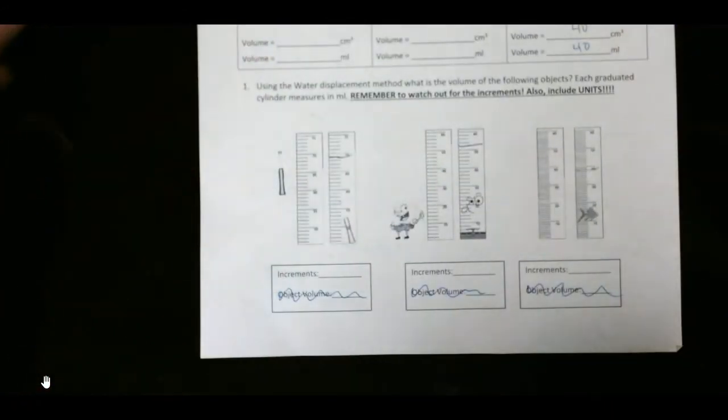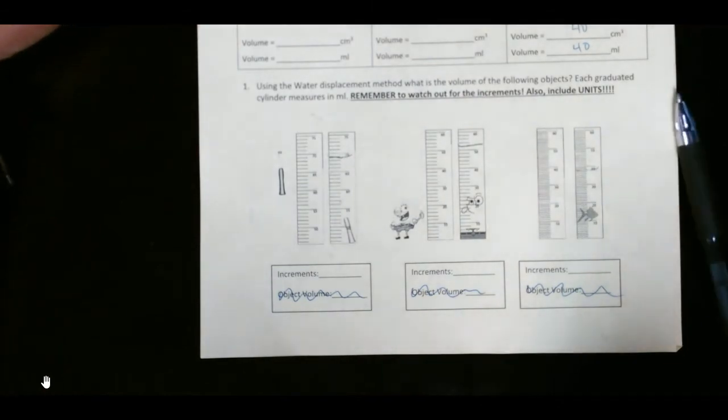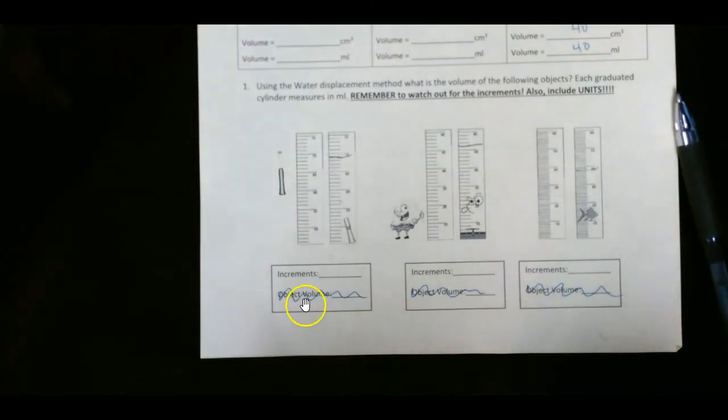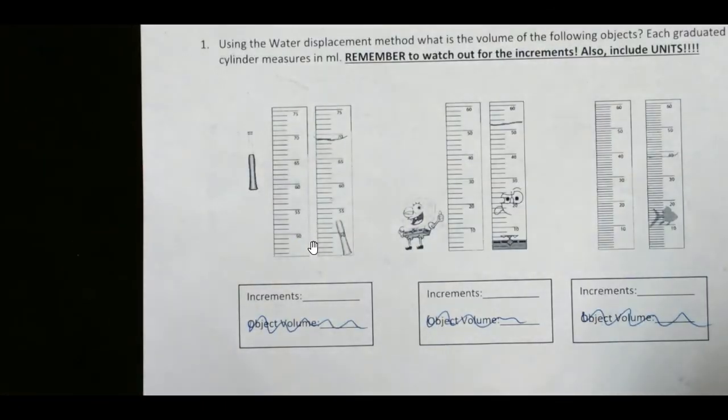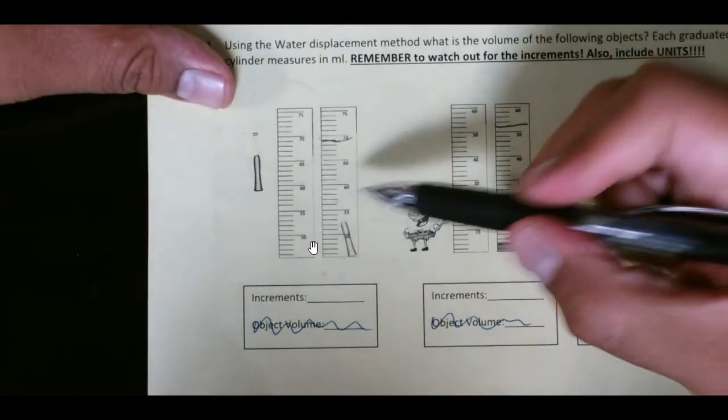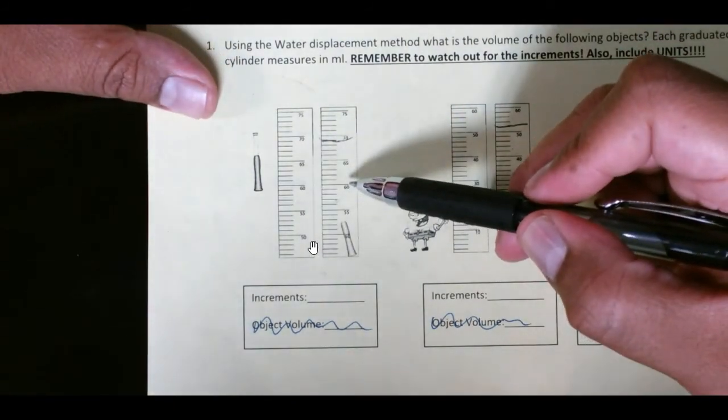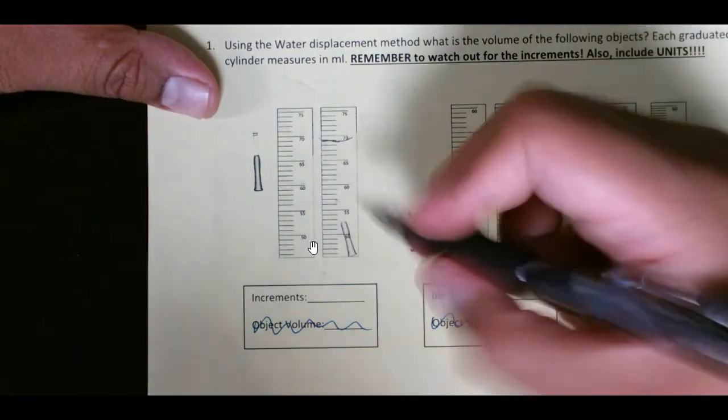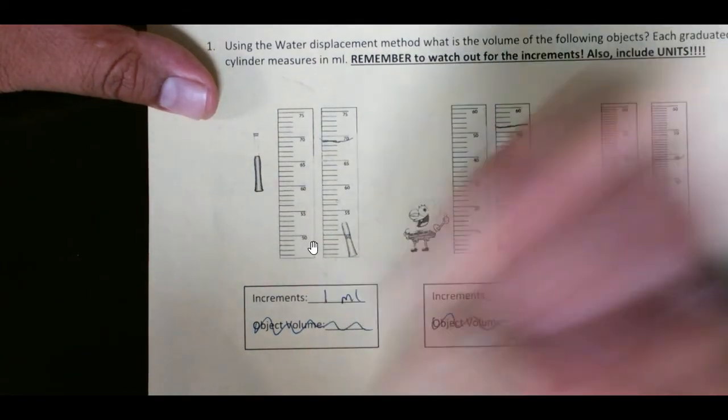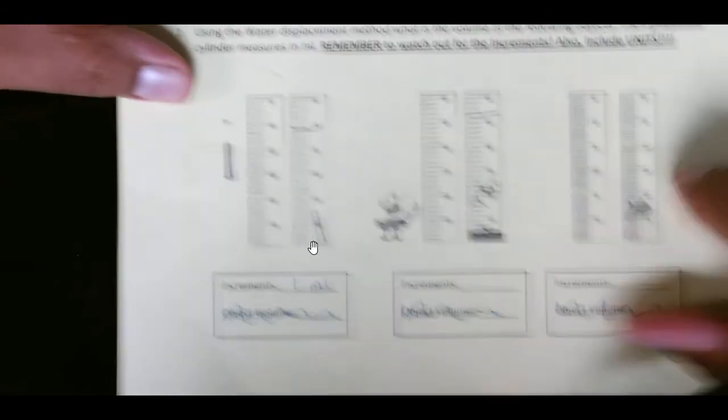Alright. What about increments? Increments, you need to know what each line is counting by. I apologize because on the video here, it probably looks a little fuzzy. I'm going to try to clear it up. Okay. There we go. So, here's what I need you to do. Just sometimes it's a guess and check. Start with 1 mL. So, 60, 61, 62, 63, 64, 65. Okay. The increments are 1 mL. Make sure you put that mL there. Alright. I'm going to do the last one.